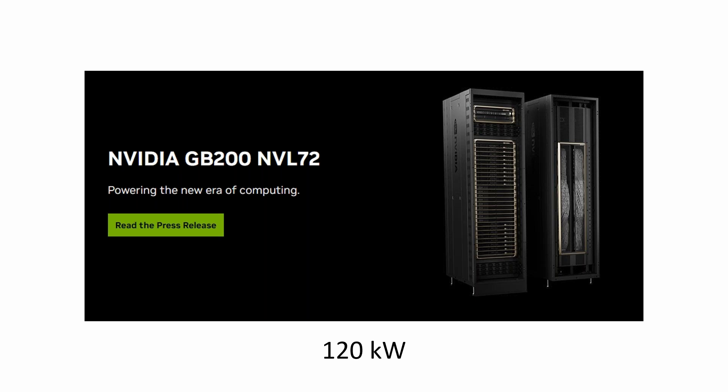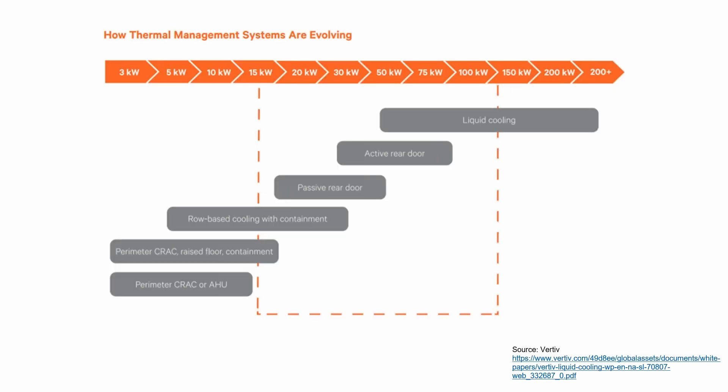The NVL72 means there are 72 individual chips inside that rack, each putting off a tremendous amount of heat, generating more heat than we've ever seen before. This is what pushed us towards liquid cooling. Our source here is Vertiv — a chart they produced showing roughly the types of kW density you can cool with different technologies.